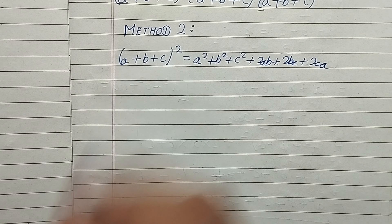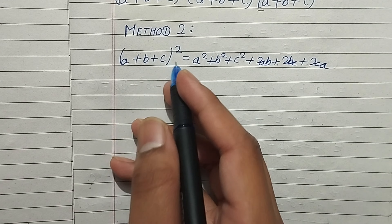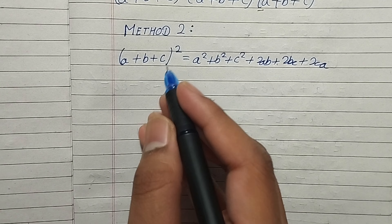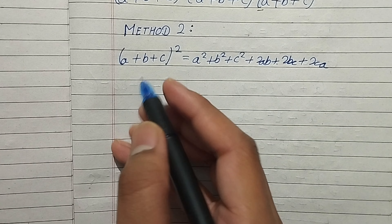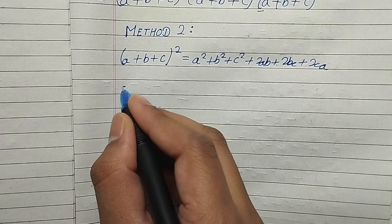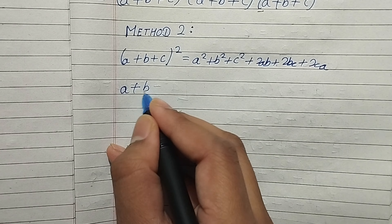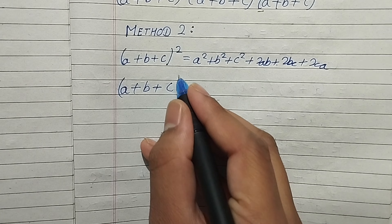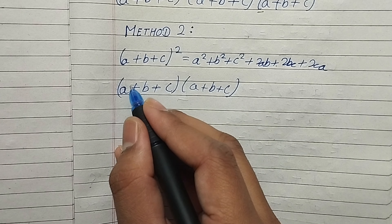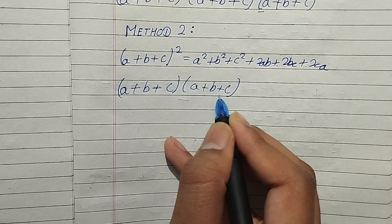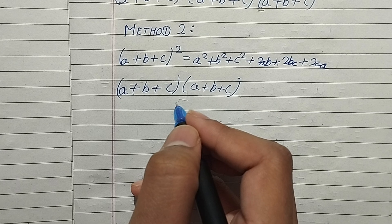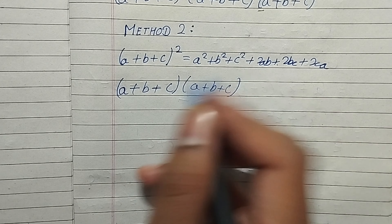This is Method 2. Here, (a + b + c)² means (a + b + c) multiplied by itself. So it becomes (a + b + c) × (a + b + c). Then a is multiplied by (a + b + c), then b is multiplied by (a + b + c), and then c is multiplied by (a + b + c).